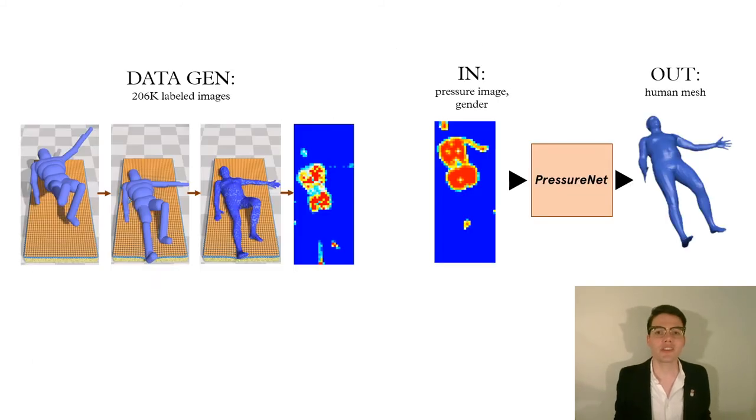In summary, we introduced a method to generate synthetic data of bodies resting in a bed with a pressure sensing mat. We used this data to train a deep network with an embedded model of pressure map reconstruction and found that this model generalized well to real data.